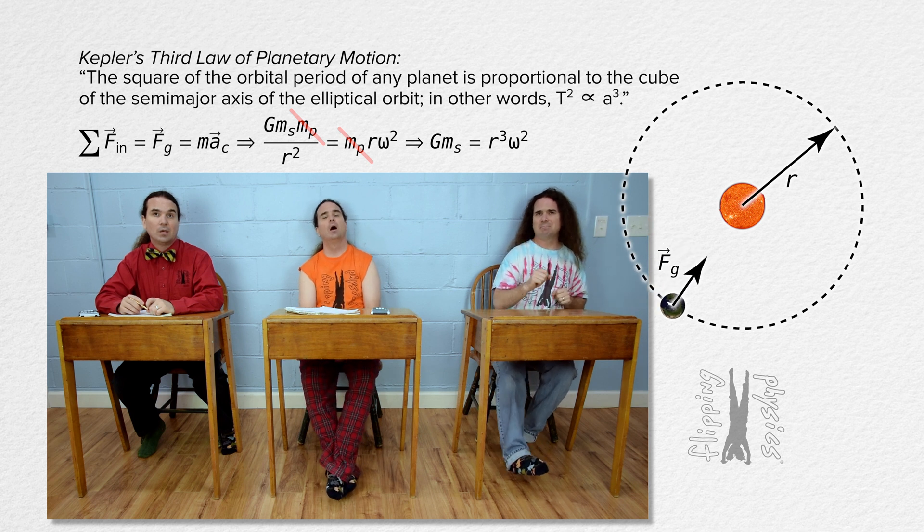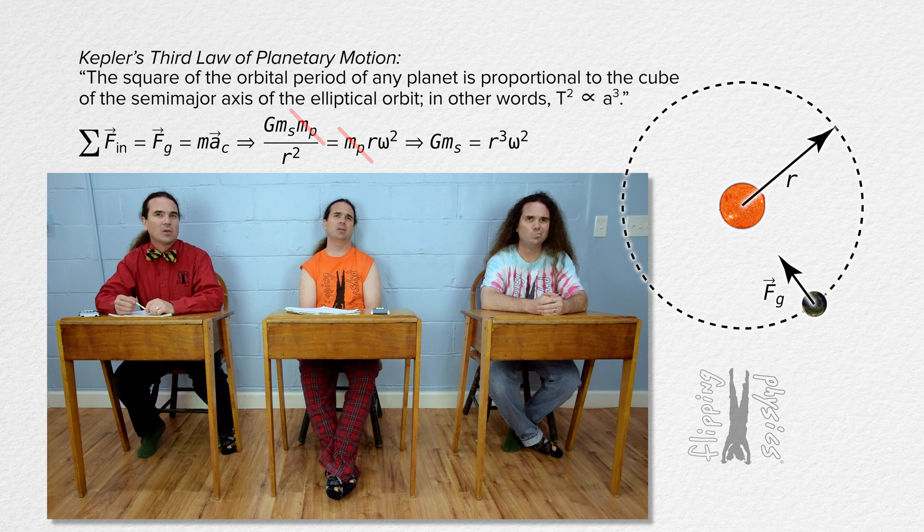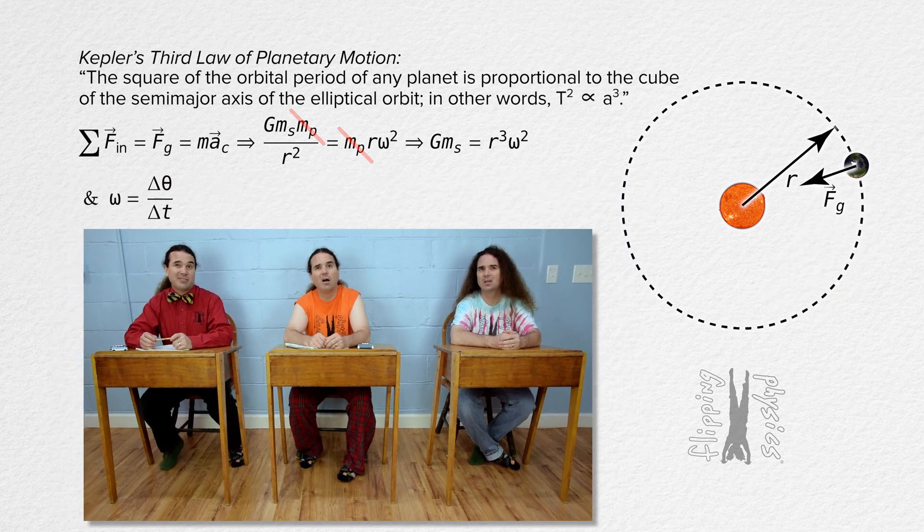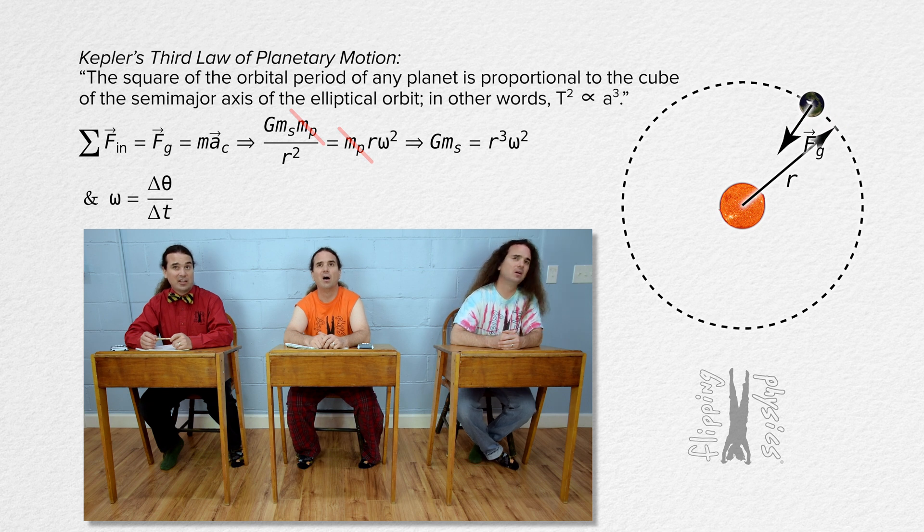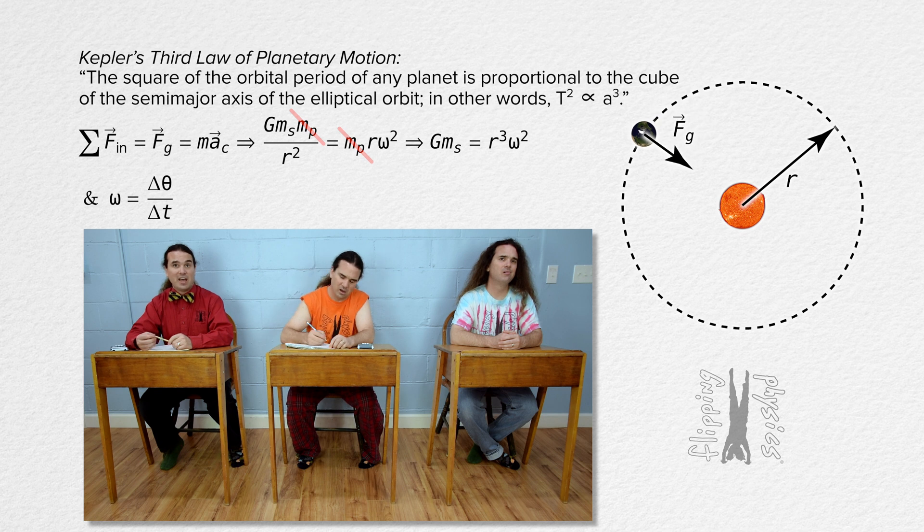But I'm not sure where to go from here. We need to get period in the equation somehow. We know the magnitude of angular velocity equals change in angular position over change in time, and for one full revolution, the change in time is the period of the orbit, and the angular displacement is 2π radians.